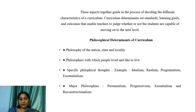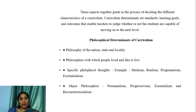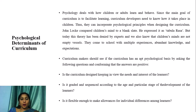The philosophical determinants of curriculum: the philosophy of the nation, state, and locality determines the curriculum. The philosophies with which people lived and like to live should have an impact on the curriculum. Specific philosophical thoughts — such as idealism, realism, pragmatism, and existentialism — and major philosophies like perennialism, progressivism, essentialism, and reconstructionism — all those factors have to be looked into while determining the curriculum.